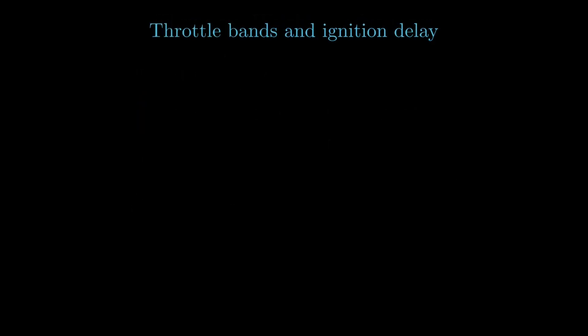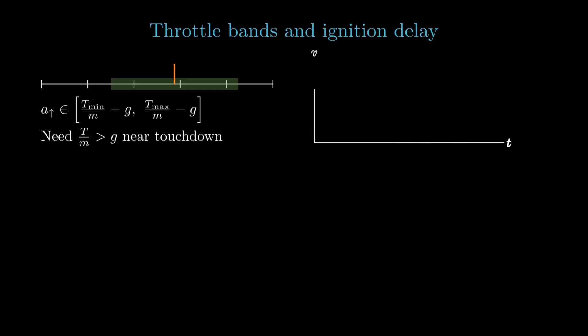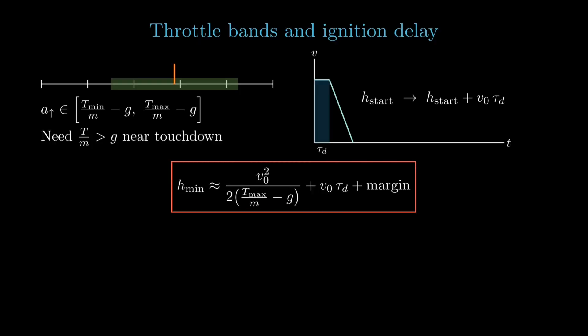Which finally brings us to the concept of throttle, something that we'd want to have command over. Near touchdown, the quantity that matters is the net upward acceleration, a_up, which is t over m minus g. To slow things down, we would need a_up to be positive, so t over m must exceed g. There is also another thing, ignition delay, we can call it tau_d. Now once we start the landing burn, thrust comes into play a short time later, and in that interval, the vehicle falls roughly v0 times tau_d. That loss simply shifts the required start height upward by that amount.